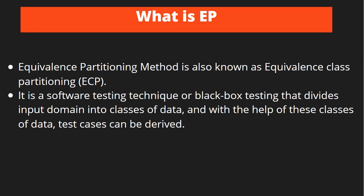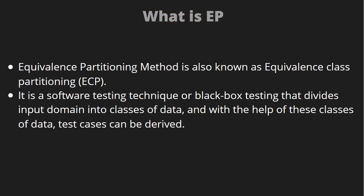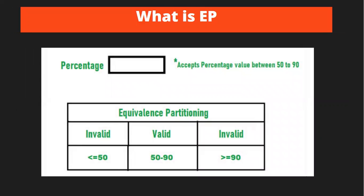EP is Equivalence Partitioning — a black box testing technique that divides the input domain into classes of data from which test cases can be derived. For example, if a percentage text box accepts values between 50 and 90, then values less than or equal to 50 are invalid, values greater than or equal to 90 are invalid, and values between 50 and 90 form the valid class. The invalid ranges are the invalid equivalence classes.